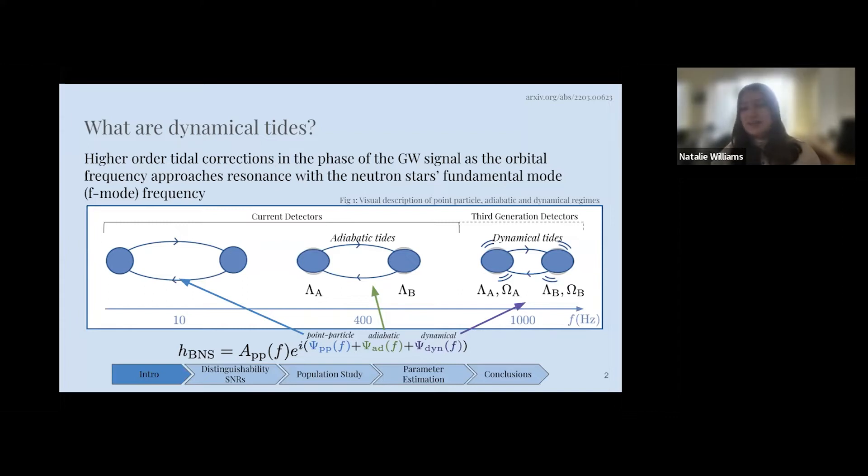At high frequencies, this linear relationship actually breaks down as the system approaches a resonance with the fundamental oscillation modes of each neutron star. This is denoted as the fundamental mode frequency, or the f-mode frequency. We can think of this system as a harmonic oscillator approaching resonance, dissipating more energy, accelerating the merger even faster. This regime is known as the dynamical regime and dynamical tides.